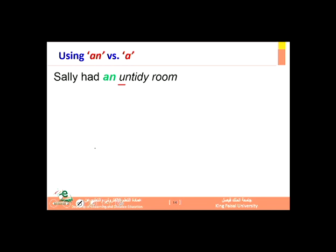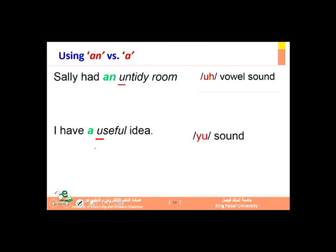For example: 'Sally had an untidy room' — here the 'u' has a vowel sound, so we use 'an.' But 'I have a useful idea' — here the 'u' has a 'you' sound, so we cannot say 'an useful idea,' we say 'a useful idea.' The first case has a vowel sound; the second has a 'you' sound, so we use 'a.'